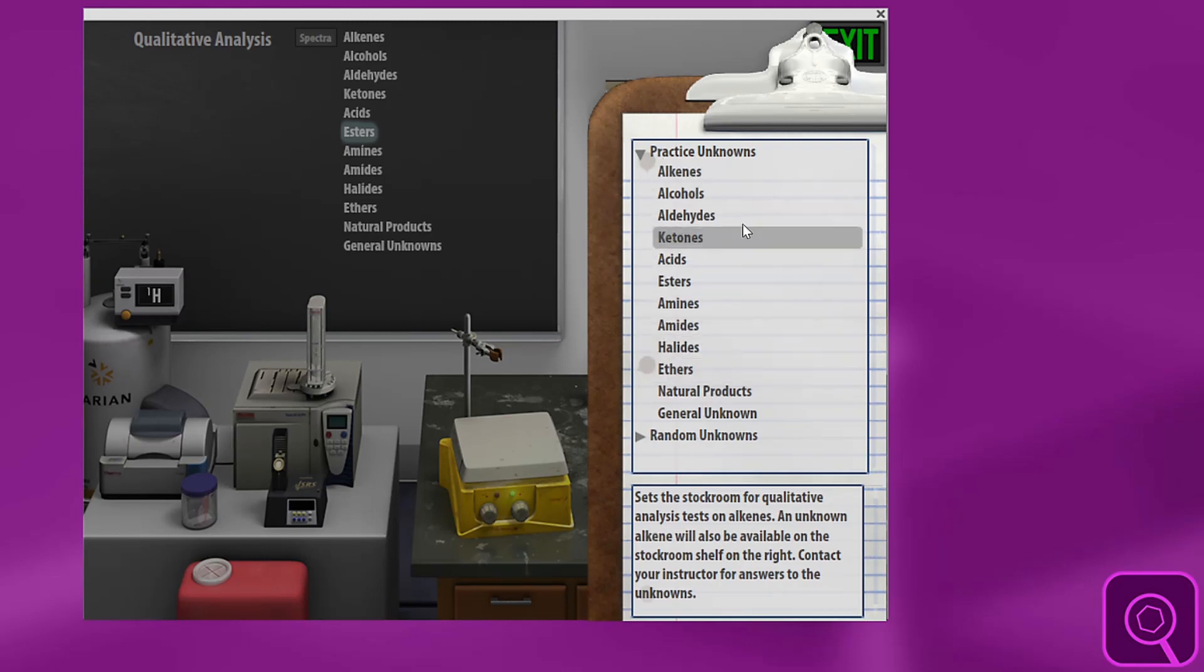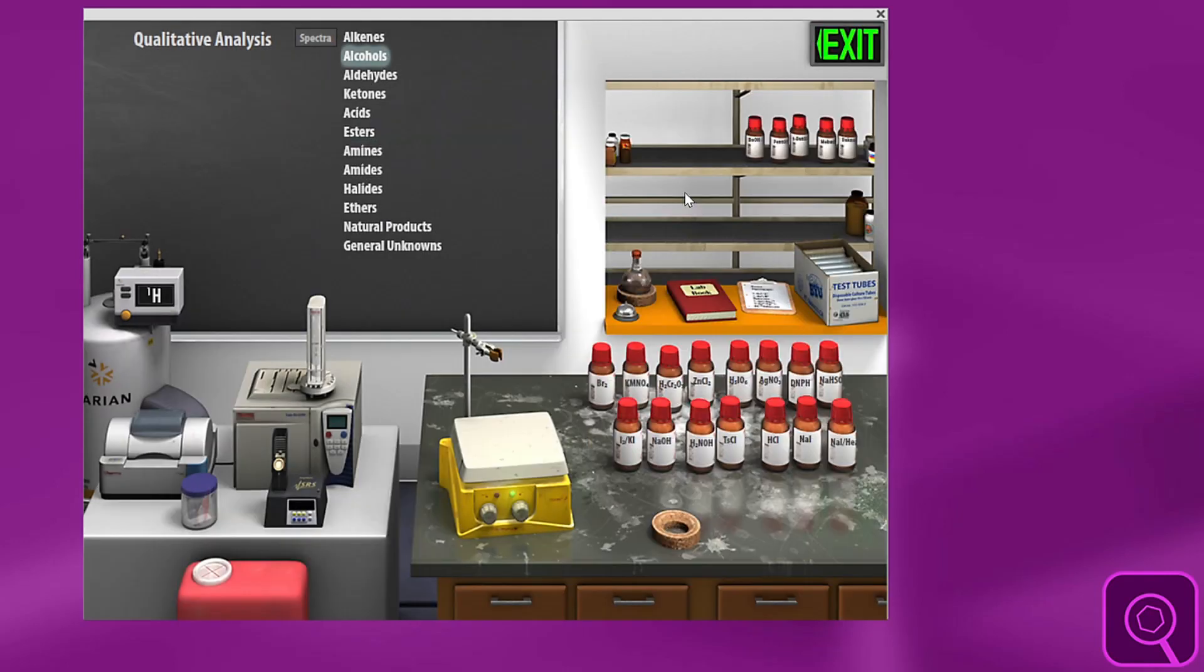Practice unknowns are split up into functional groups. You can just click on a functional group and then on the shelf will appear an unknown with a number on it. You can look up these numbers in your answer guide as an instructor, so the student will perform all the tests they need to do, determine what their unknown is, and then report that to you.